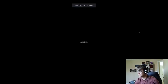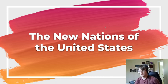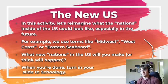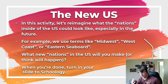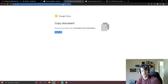Our last activity is a more imaginative one — we're going to look at what if we redrew the United States to match the different nations that are inside of it. You're going to reimagine what the nations inside the U.S. could look like, especially in the future as time goes on. We tend to use words like 'Midwest,' 'West Coast,' or 'Eastern Seaboard,' and we're really going to explore what nations in the U.S. you think will happen in the future. You'll turn your copy of this into Schoology when you're done.